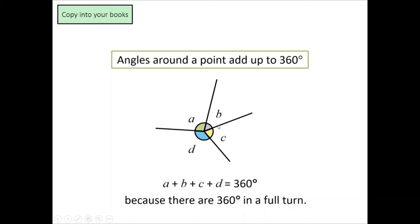Because we have a whole point around here. There's a point and everything around that point would add up to 360 degrees because that is how much there is in a full turn. Therefore, angles around a point would add up to 360 degrees.